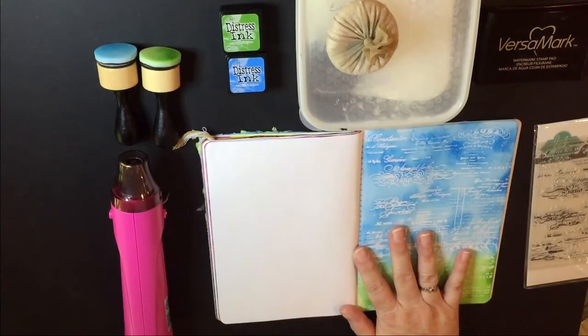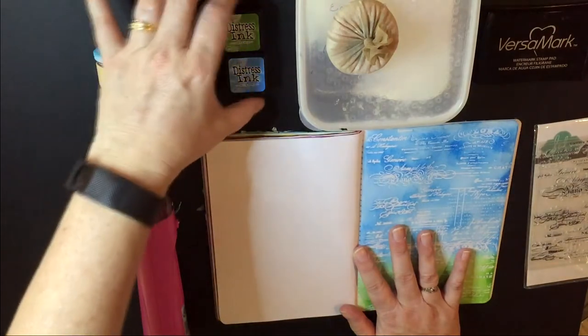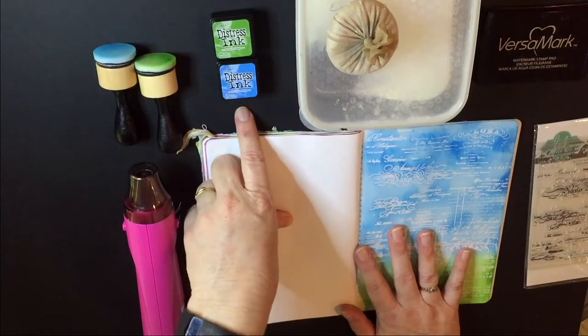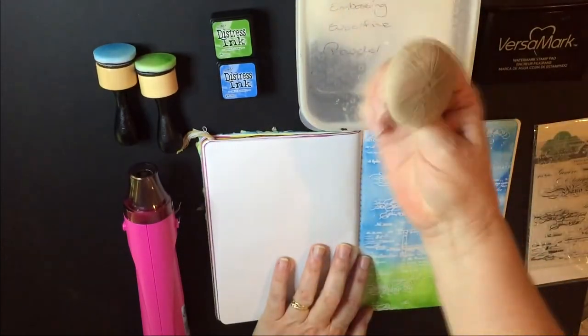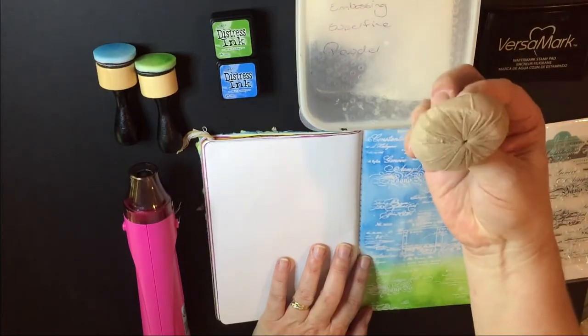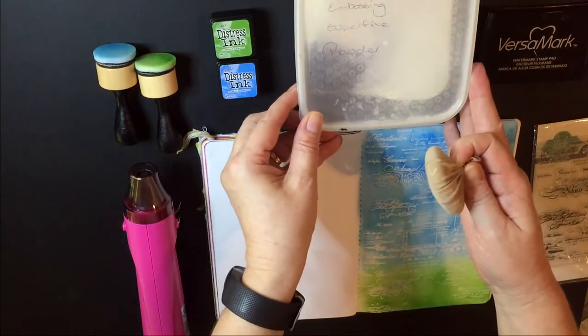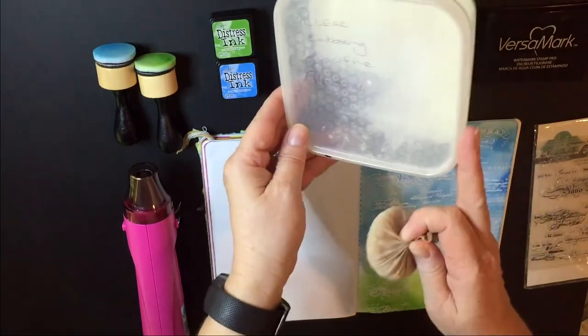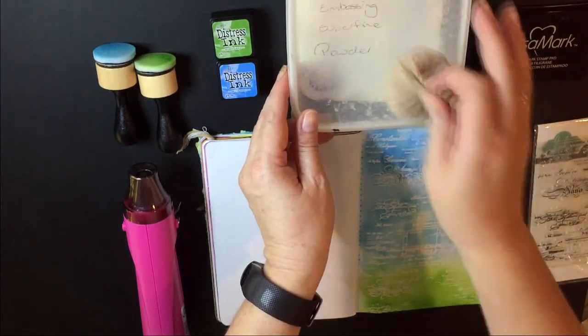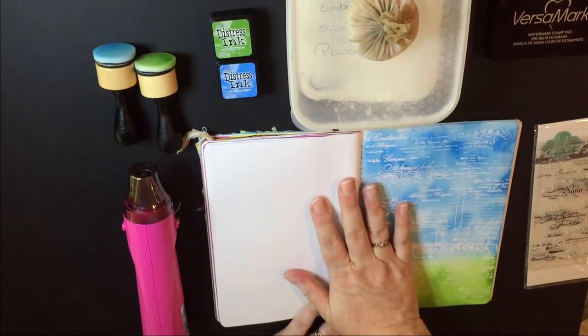So the tools that I'm using today: my heat gun, some distress ink - I've got Mowed Lawn and Salty Ocean, my own handmade embossing powder buddy which is just made of an old stocking filled with baby powder. I have some embossing super fine powder by Ranger - I buy that in bulk because I do like embossing. I have my Versamark ink and of course my art journal.